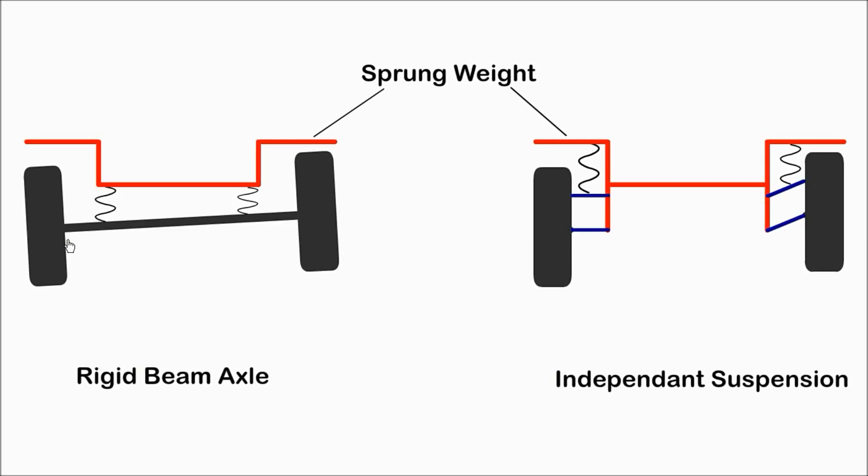However, they are strong and have good load bearing capacity, suitable for trucks. With an independent suspension, each wheel is connected by its own linkage and its movement does not affect the other wheel. An independent suspension has less unsprung weight and allows the wheels to move independently of each other.